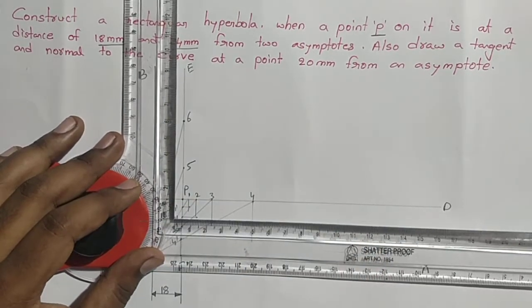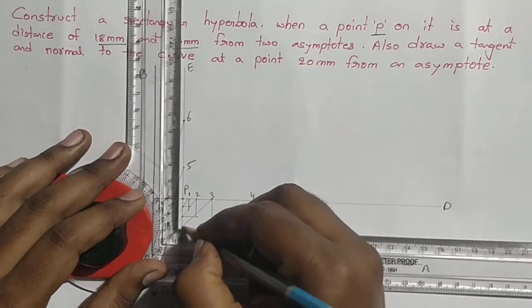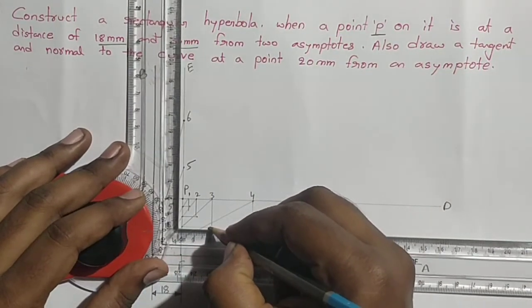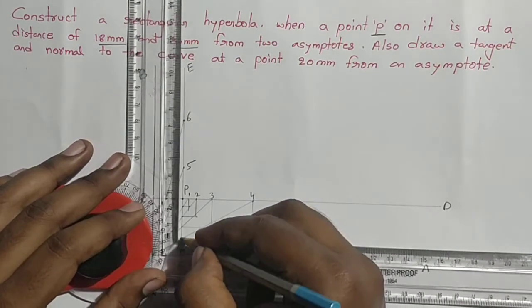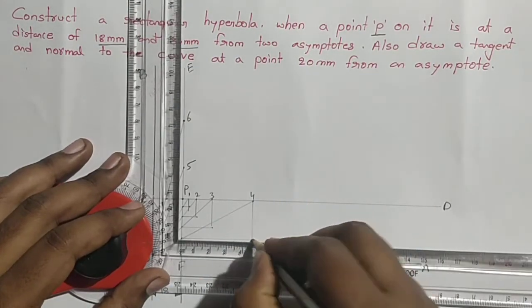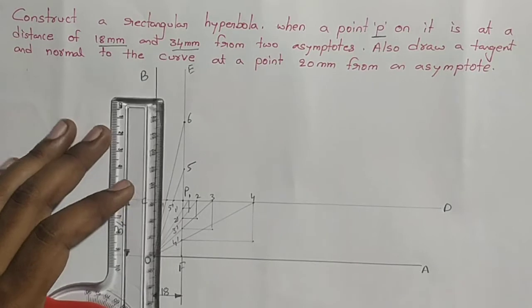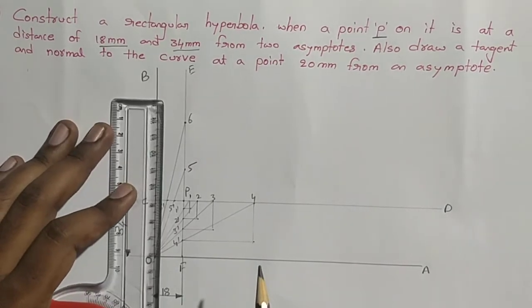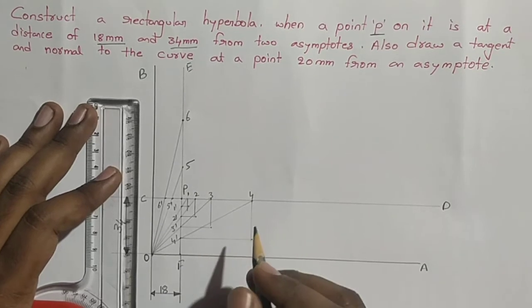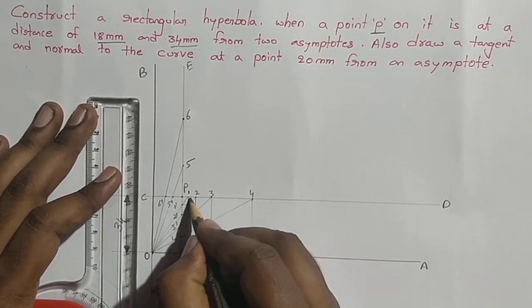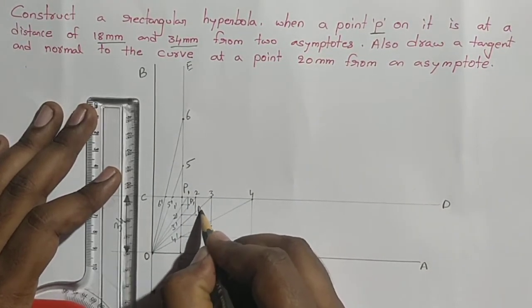From 1 dash it will intersect the vertical line at one point. From 2 dash to intersecting the second line at one point. 3 dash to intersect the vertical line. 4 dash to vertical intersection.